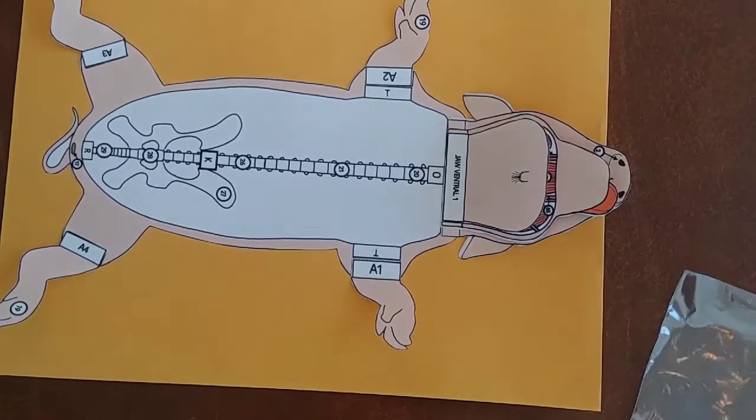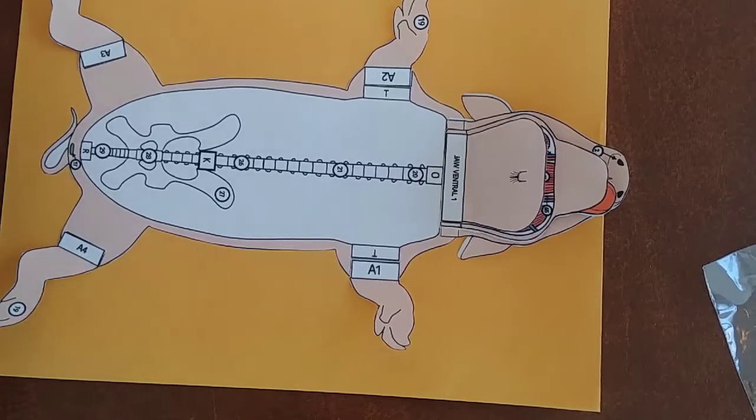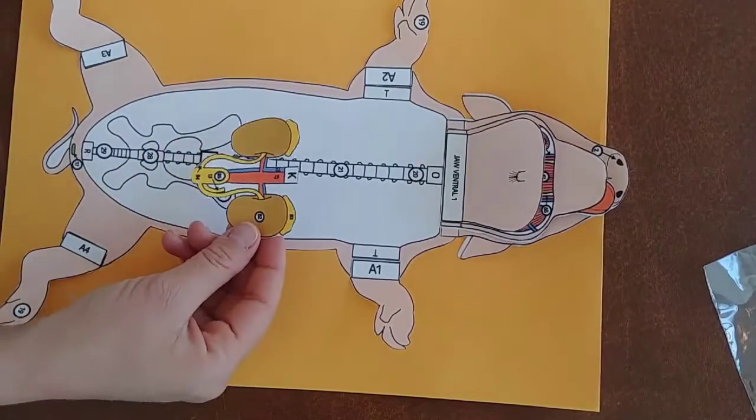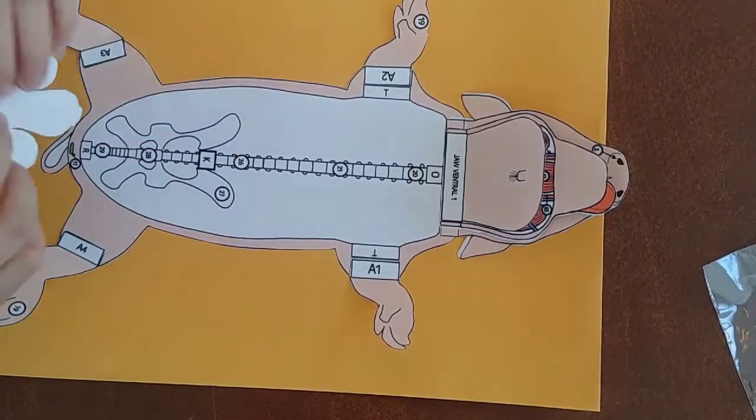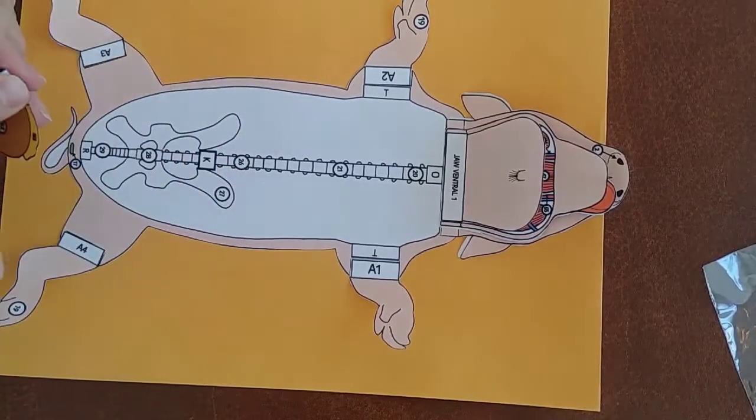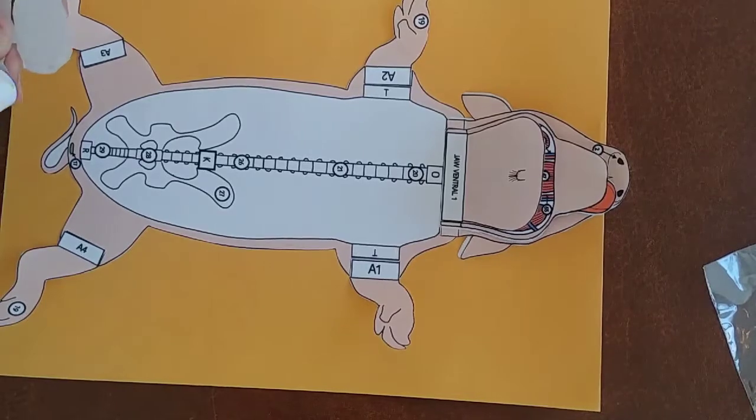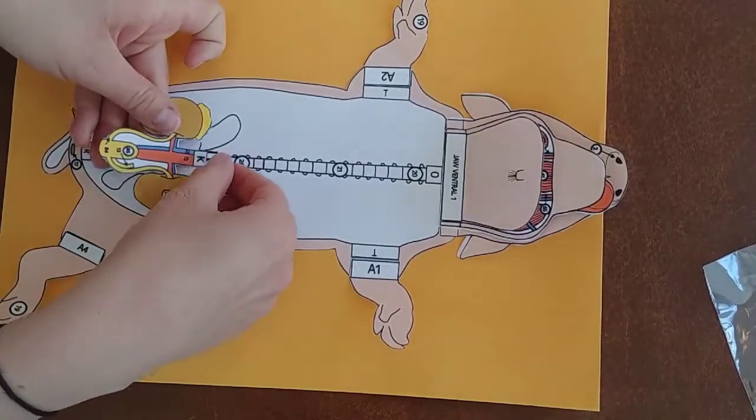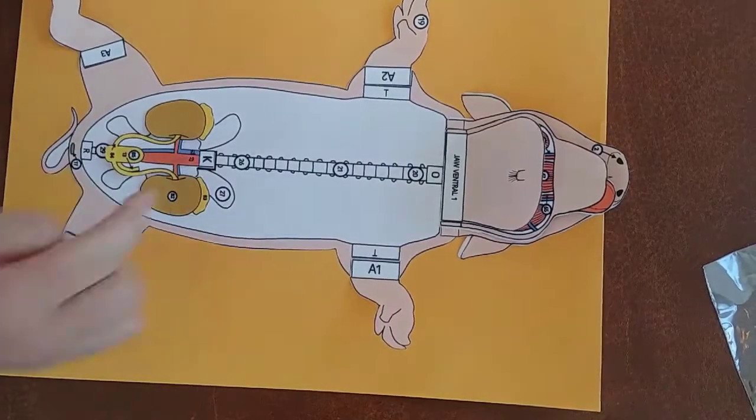Next up is the kidneys. We're going to be working away from the deep parts to the more superficial parts. We have our kidneys and we're going to attach K to K. And again, we're not gluing the entire thing down, just these little flaps so we can move them out of the way to see other structures underneath.